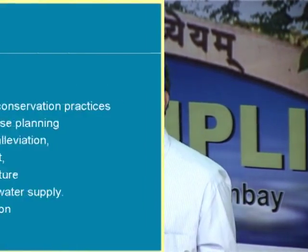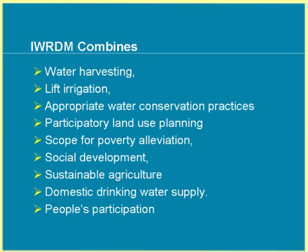Appropriate water conservation practices include reducing evaporation, reducing seepage, and location-specific measures. Watershed scale development requires people's participation, appropriate land use and planning, and the ultimate aim is poverty alleviation and social development. This is possible only in a sustainable way — we cannot overdraw available groundwater at the expense of future generations. Everything must be done sustainably.